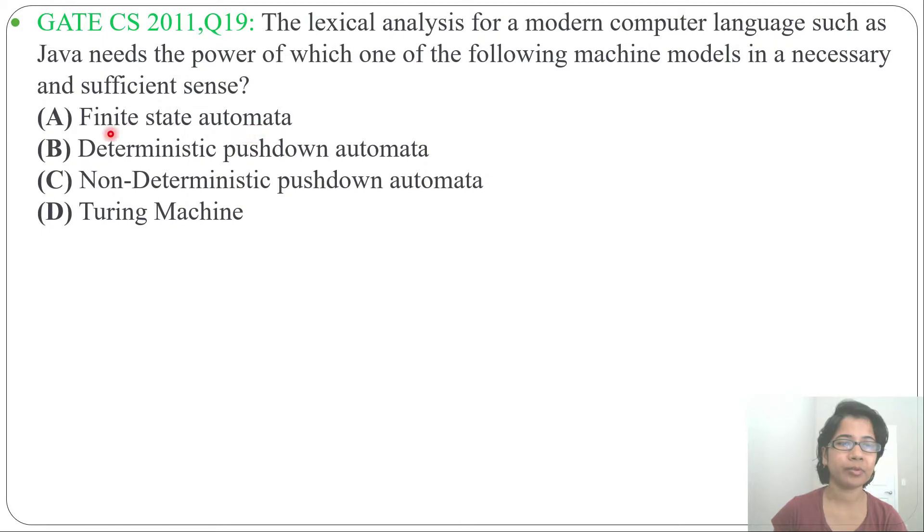It is asking Java needs power of which machine. Four options for machine are given: Option A - Finite State Automata, Option B - Deterministic Pushdown Automata, Option C - Non-Deterministic Pushdown Automata, and Option D - Turing Machine.